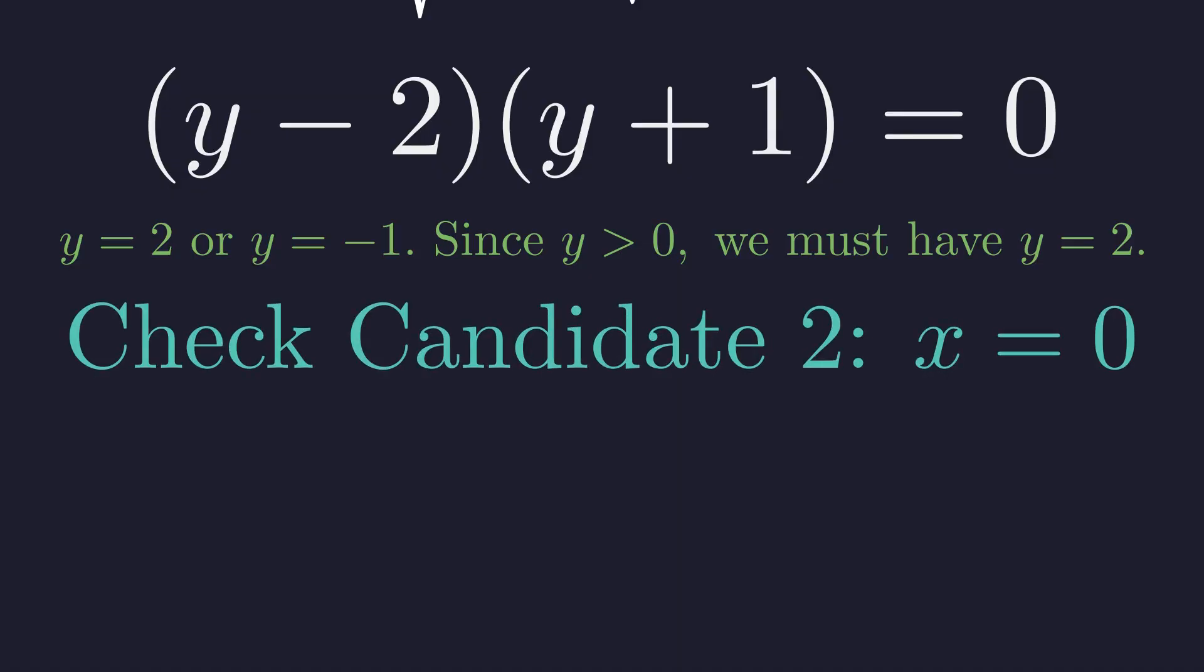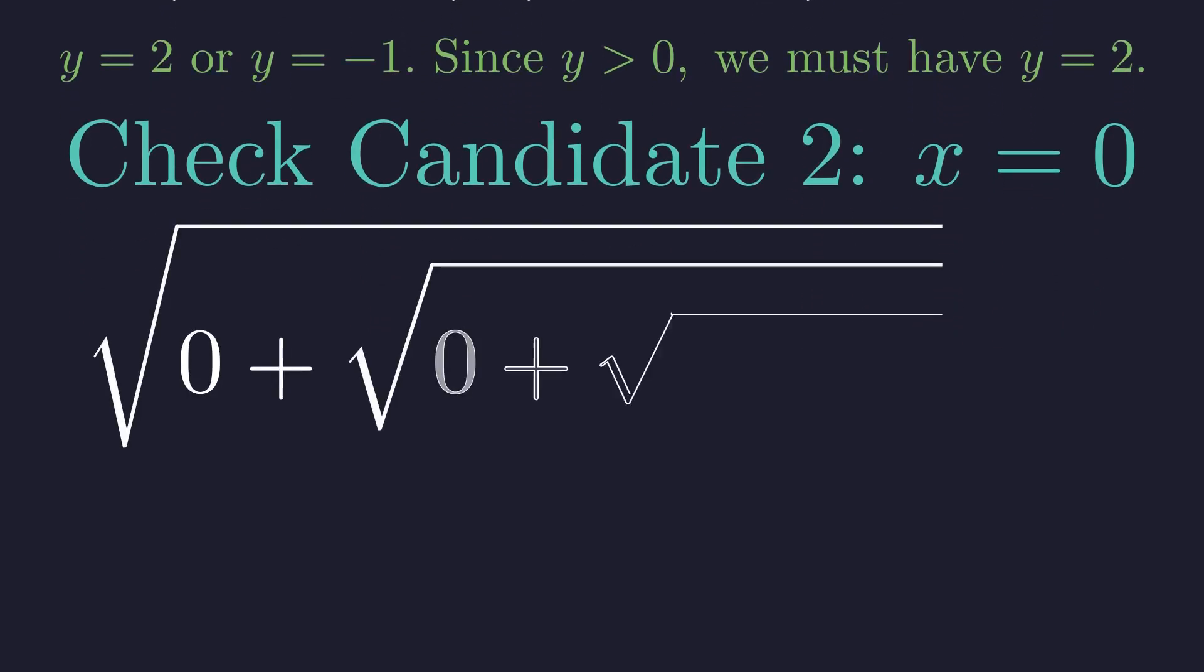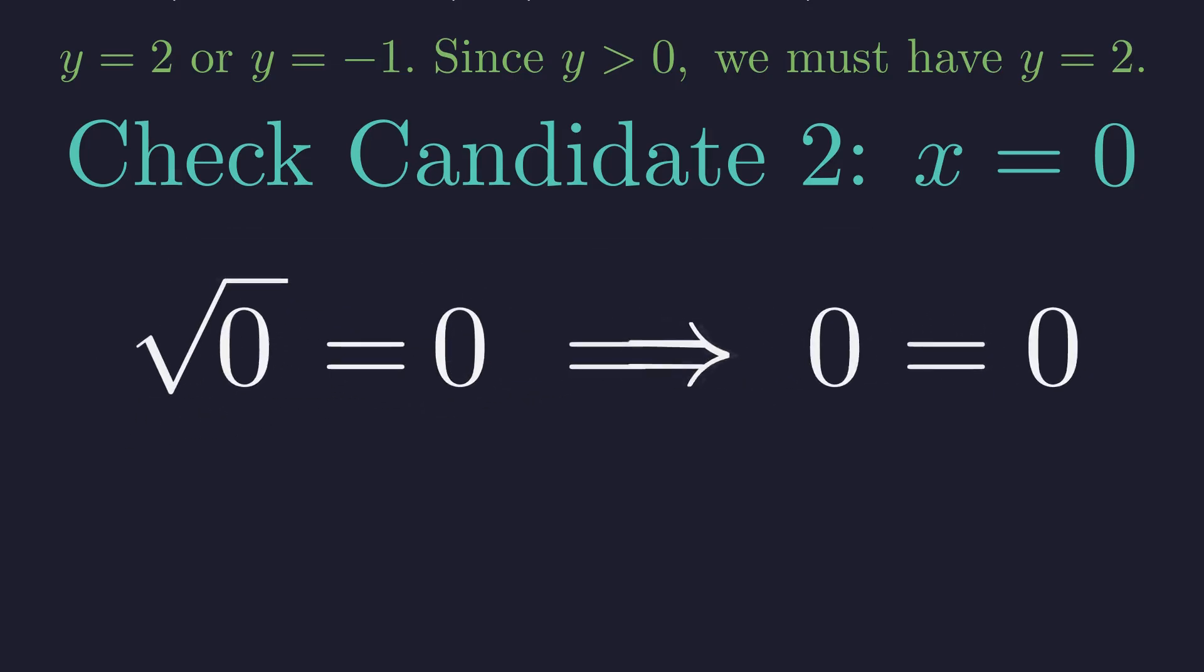Now the moment of truth for x equals 0. This one looks too simple to be real. Plugging in 0 simplifies things really fast. Everything becomes square root of 0, which is 0. 0 equals 0 is true. Even the trivial solution survives. That's actually rare. Both candidates made it through.